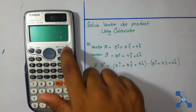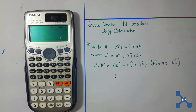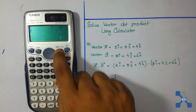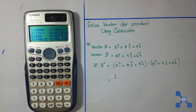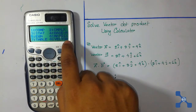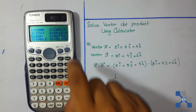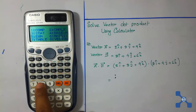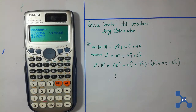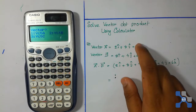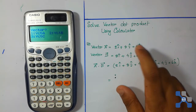Power on the calculator and then press the mode button. We see that 8 is for vector, so press 8. Then we need to load the vector onto the calculator.